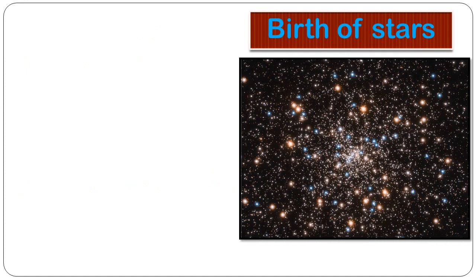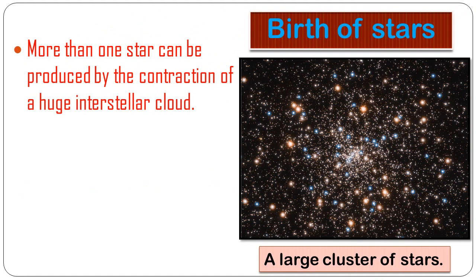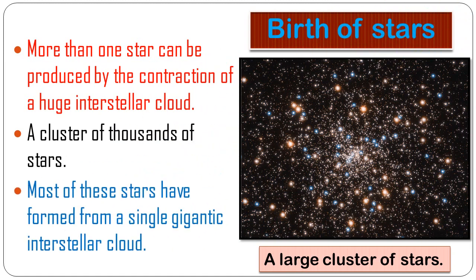More than one star can be produced by the contraction of a huge interstellar cloud. Due to a disturbance in an interstellar cloud, it starts contracting, temperature and density increase, and a collection of stars — a star cluster — can be formed from a single gigantic interstellar cloud. This picture shows a cluster of thousands of stars, most of which formed from a single massive interstellar cloud.